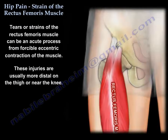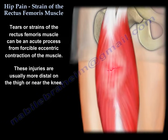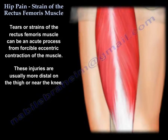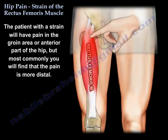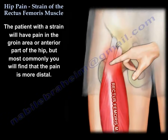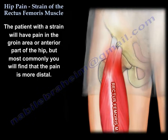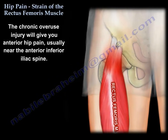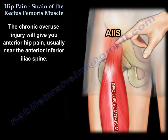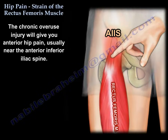These tears or strains of the muscle can be an acute process from a forceful contraction of the muscle, but these injuries are more distal on the thigh or near the knee. Patients with the strain will have pain in the groin or in the anterior part of the hip, but most commonly the pain is found more distally. The chronic, overuse type will give you hip pain, usually near the anterior inferior iliac spine.